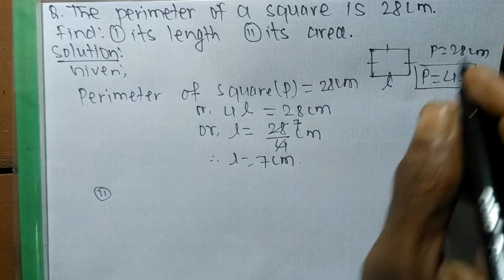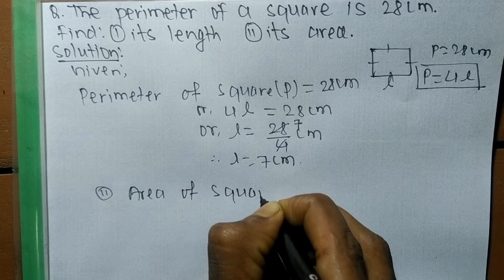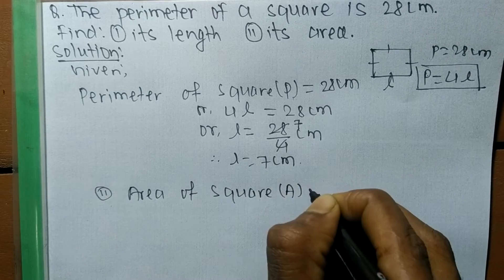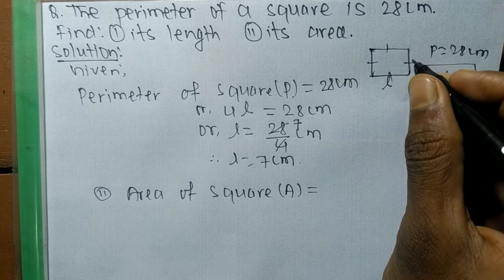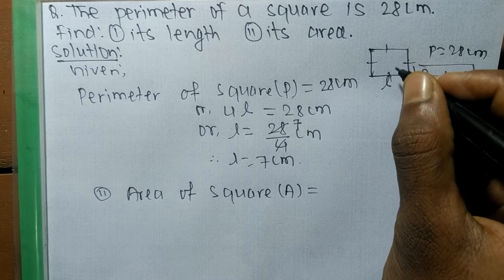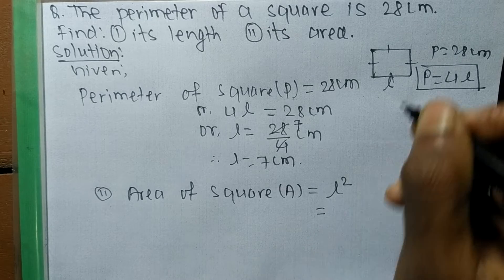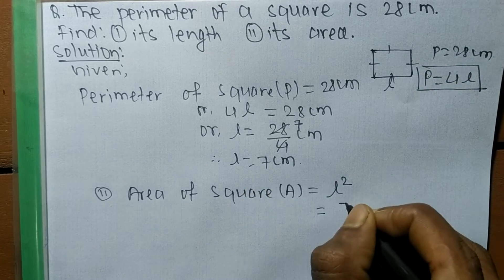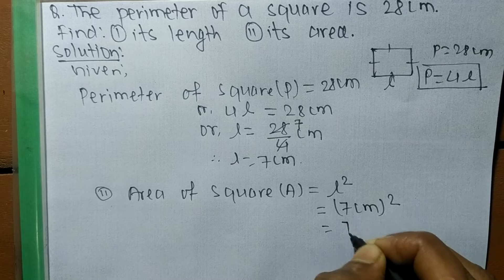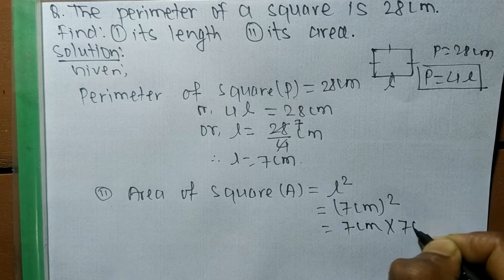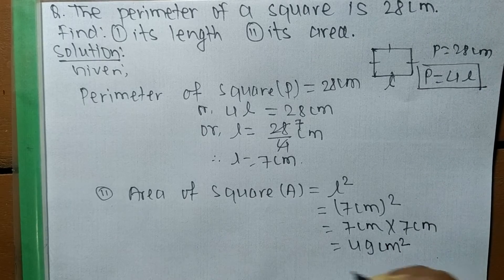Now we have to find the area. The area of a square is denoted by A. Area means length into breadth, and since all sides of a square are equal, the area of a square becomes L squared. Here L is 7 centimeters, so A = 7 × 7 = 49 centimeters squared.